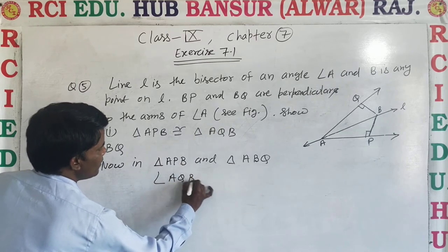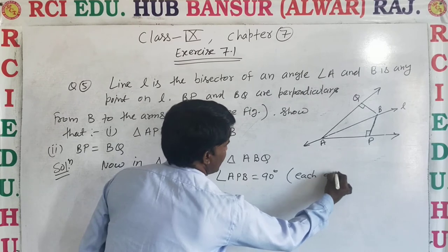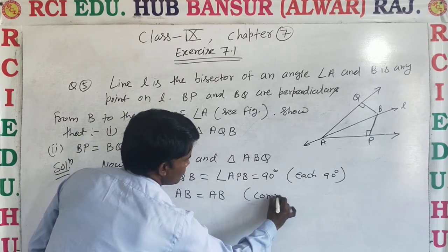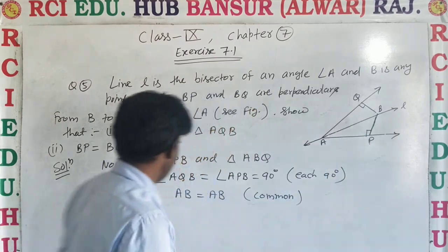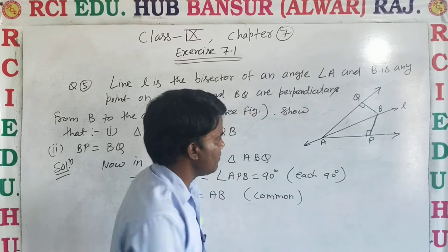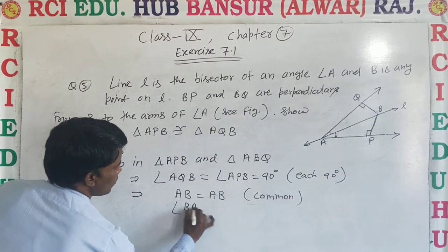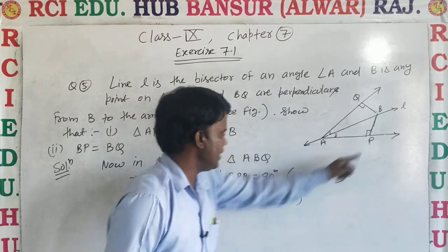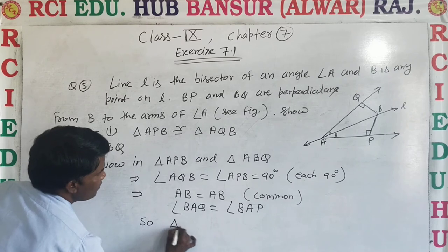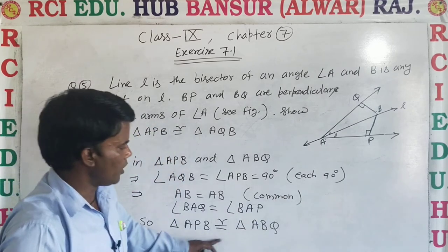Angle AQB is equal to angle APB, each equal to 90 degrees. AB is common. Since L is the bisector of angle A, angle BAQ is equal to angle BAP. Therefore, triangle APB is congruent to triangle AQB by AAS rule. First part is proved.